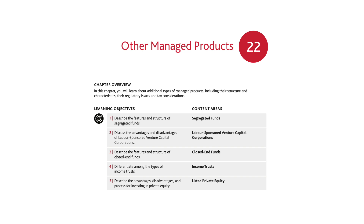There are five main areas to this chapter: segregated funds, labor-sponsored venture capital corporations, closed-end funds, income trusts, and listed private equity.